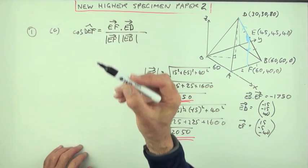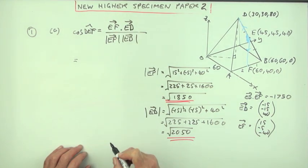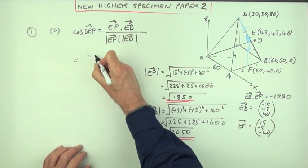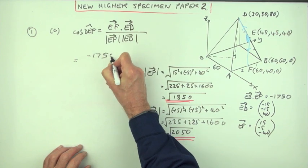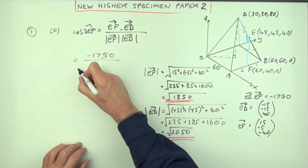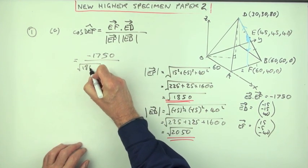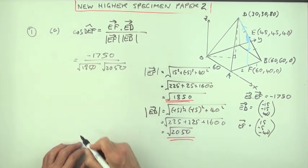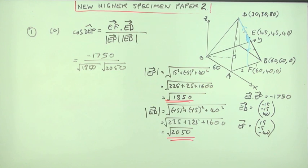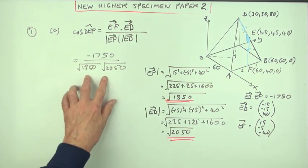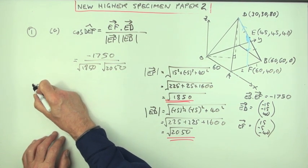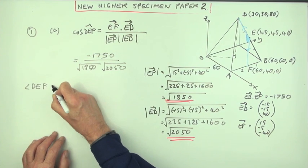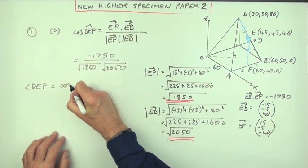So we'll get maxed out these two. Then let's just pop it all in. I've got a bit of squint now. So that was negative 1750 over root 1850, root 2050. I'm not going to bother working that out.